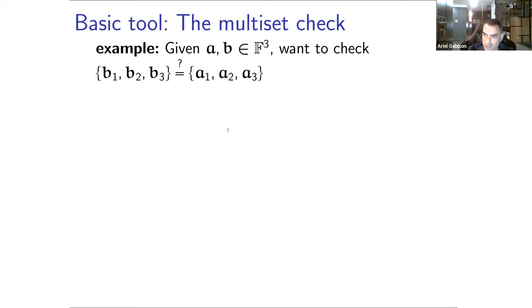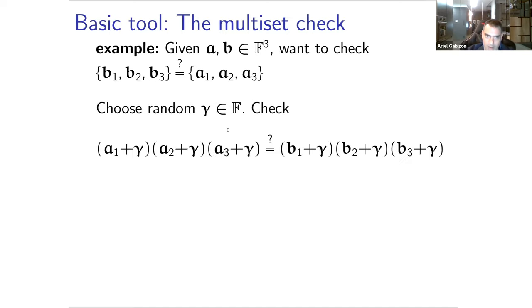What is the multi-set check? Say I'm giving you two vectors of field elements and I ask, are they equal as multi-sets? Meaning that up to some reordering, they contain the same elements also when counting repetitions.